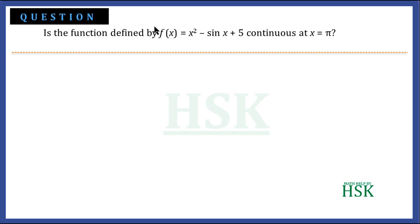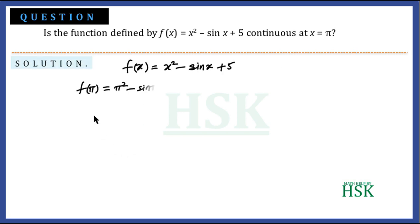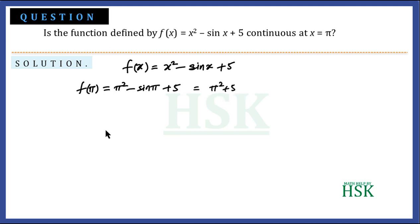We have to check the continuity of this function at x = π. We take the given function and calculate its value when x = π. On placing x = π, we get π² − sin π + 5. Since sin π = sin 180° = 0, this value is equal to π² + 5.